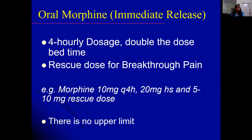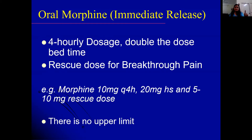We also prescribe a rescue dose for breakthrough pain. While the patient is on regular four-hourly morphine, if they experience an acute exacerbation of pain in between, an extra dose — the rescue dose — is given. For example, if the patient is on 10 mg morphine four-hourly, we prescribe 10 mg morphine four-hourly, 20 mg at bedtime, and 10 mg as a rescue dose for breakthrough pain.